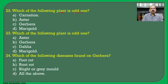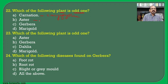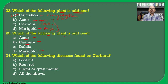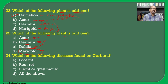Which of the following plant is the odd one? Carnation belongs to family Caryophyllaceae, while aster, gerbera and marigold belong to family Asteraceae — so carnation is the odd one. In the next question, aster, gerbera, dahlia, and marigold: aster, gerbera and dahlia are all generic names belonging to Asteraceae, but marigold is a common name. Hence marigold is the odd one with respect to botanical names.